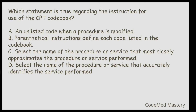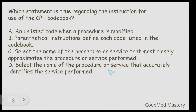First question: Which statement is true regarding the instruction for use of the CPT code book? Option A: an unlisted code when a procedure is modified. Option B: parenthetical instructions define each code listed in the code book. Option C: select the name of the procedure or service that most closely approximates the procedure performed. Option D: select the name of the procedure or service that accurately identifies the service performed. The right answer is option D.